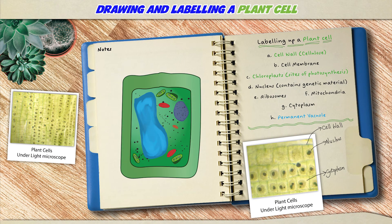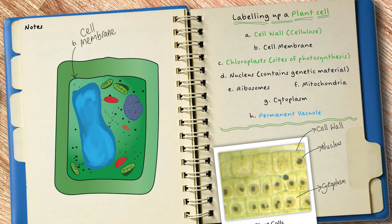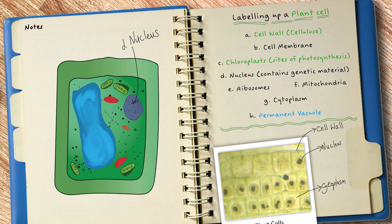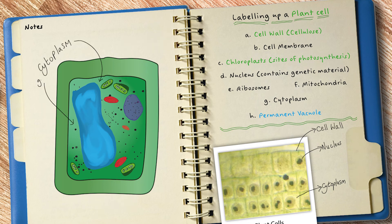Lastly let's draw a typical plant cell, which is just like an animal cell with a few extra bits. Plant cells have a cell wall labeled A, and B is the cell membrane; C is for the chloroplasts, which of course are the sites of photosynthesis; D is the nucleus containing the genetic material; E, ribosomes; F, mitochondria; G, the cytoplasm; and finally H is the plant cell's permanent vacuole.